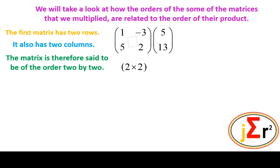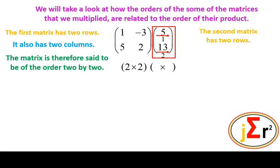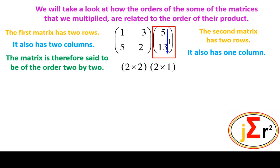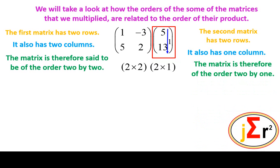The second matrix has two rows — the ones that go across. It also has one column; in this particular case, there is only one going vertically. The matrix is therefore of the order 2x1. That is a 2x1 matrix — it has two rows and one column.